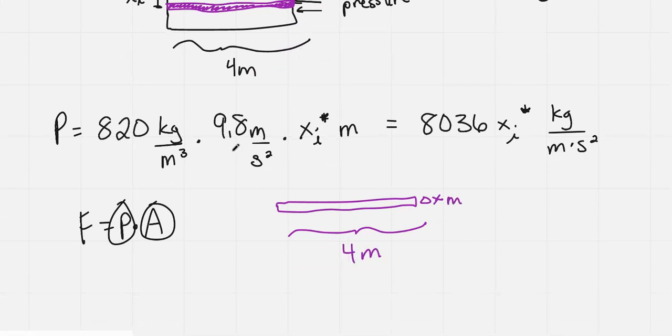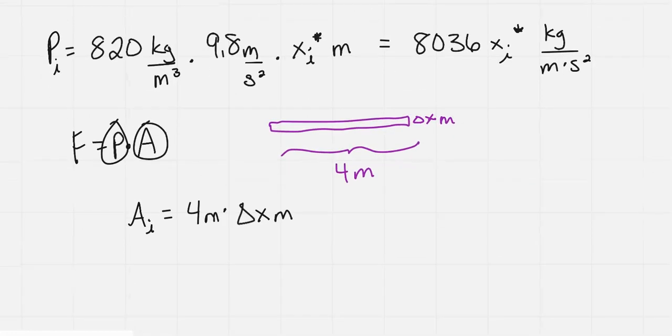In this case, our width stays constant at 4, which is very nice for our purposes. So it's delta x meters thickness, 4 meters width, and so our area of the ith slice would be 4 meters times delta x meters. So we can't say just 8 this time because we're not talking about the bottom. We're talking about pushing up against the side.